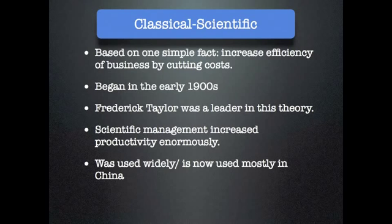The first theory of management we're going to look at is called classical scientific. Basically, this theory of management places at the highest point the idea of increasing profits by increasing productivity. Frederick Taylor is the man most famous for this, and it began in the early 1900s. The real benefit is that the increase in productivity is enormous. It is used mostly now in countries like China.